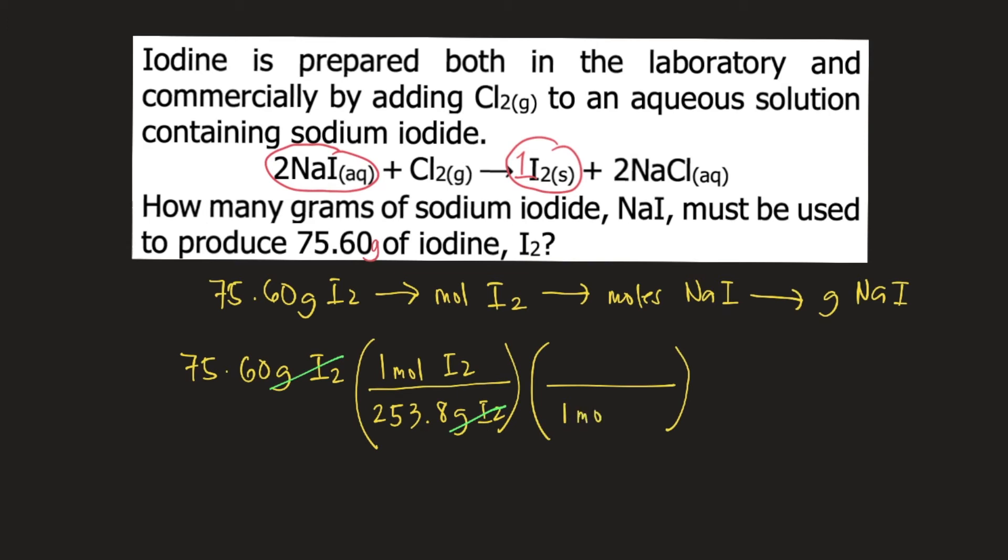1 mole of I2, you need 2 moles of NaI. So moles of I2 will cancel. We now have moles of NaI.